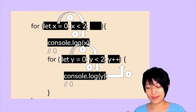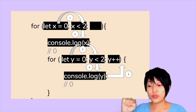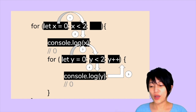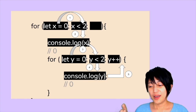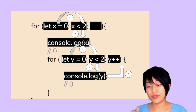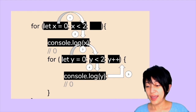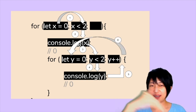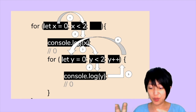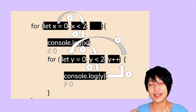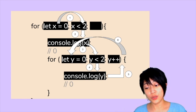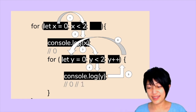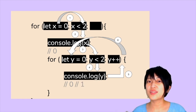What happens next is the second for loop wants to loop back within itself. We add one via y++, loop back to that inner for loop, and test again. Now y equals 1, which is still smaller than 2, so we get console.log printing y as 1.